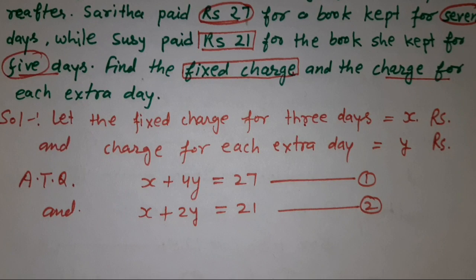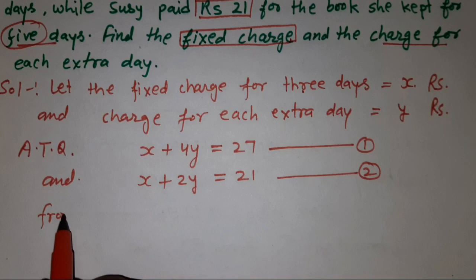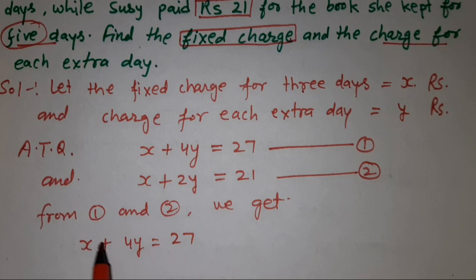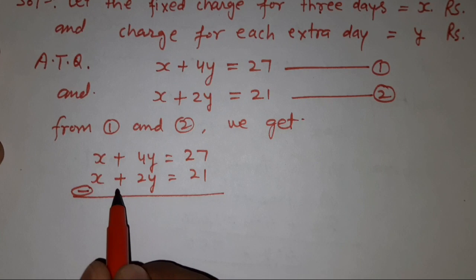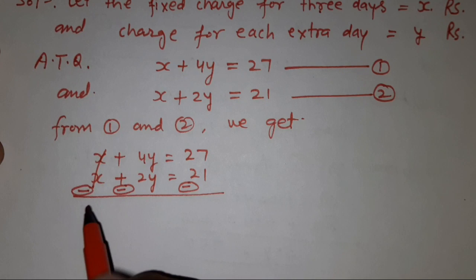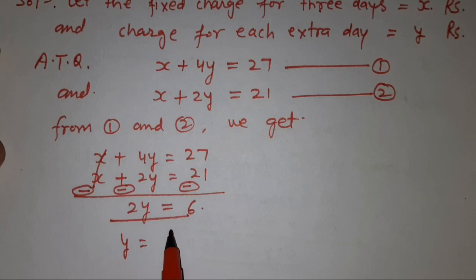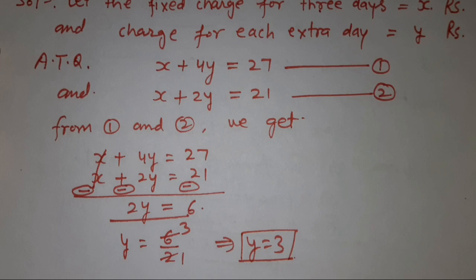दोनों equations solve करेंगे। From equation 1 and 2: x + 4y = 27 और x + 2y = 21। Subtract करने पर — sign change होगा, x cancel, 4y − 2y = 2y, 27 − 21 = 6। So 2y = 6, y = 6/2 = 3।